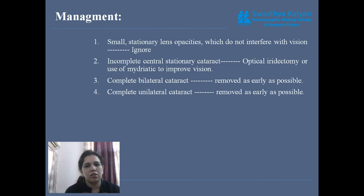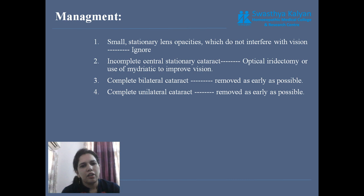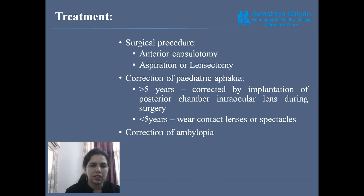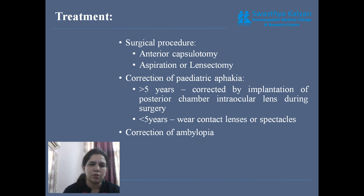Regarding management: small stationary lens opacities, like simple embryonic cataract and blue dot cataract, should be ignored. If the opacities are incomplete central stationary cataracts, then optical iridectomy is done and mydriatics are used to improve vision. If there is complete unilateral or bilateral cataract, removal of the cataract should be done as early as possible. Surgical management includes anterior capsulectomy, meaning removal of the anterior capsule, then lensectomy and aspiration of the lens.